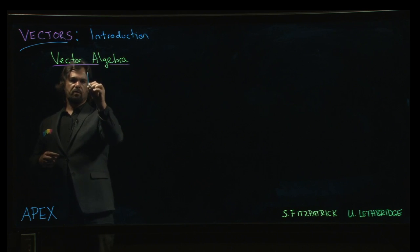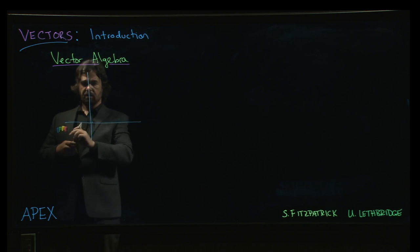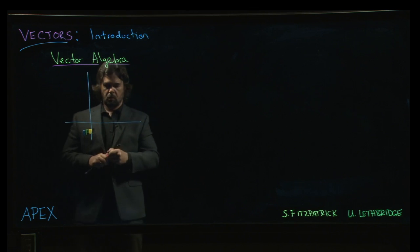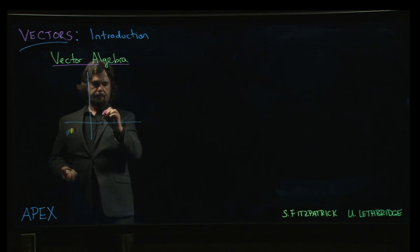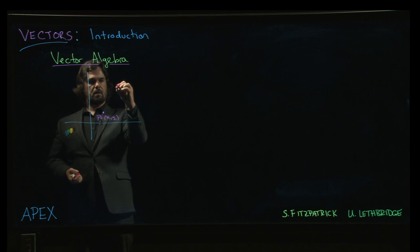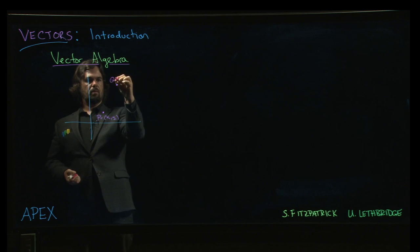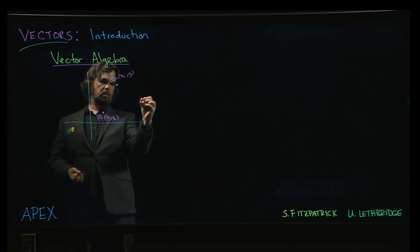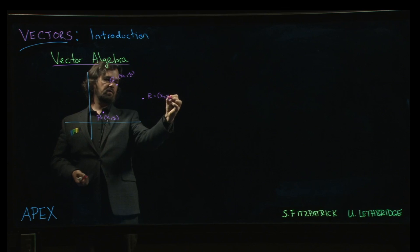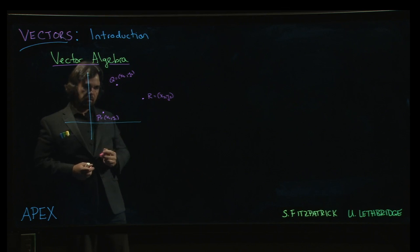But think about the following. If we think of vectors as a means of giving directions, imagine you have point P with coordinates x1, y1, and up here I've got another point Q with coordinates x2 and y2, and some other point R with coordinates x3 and y3.